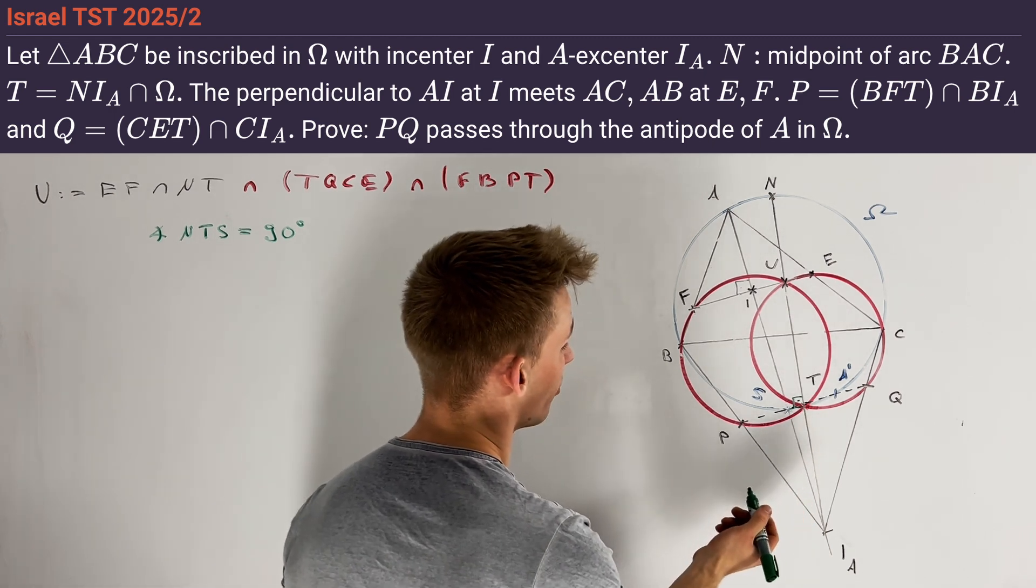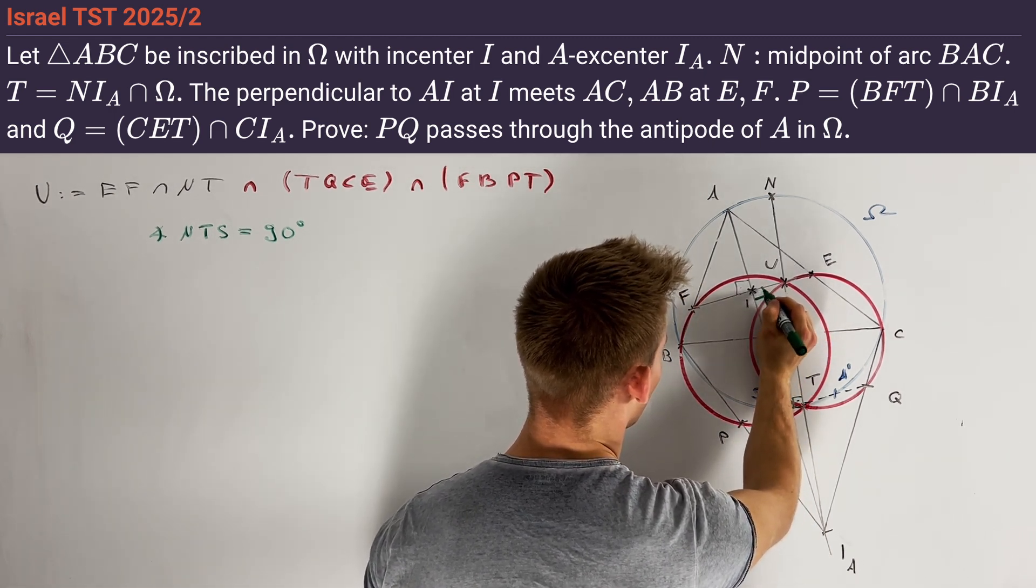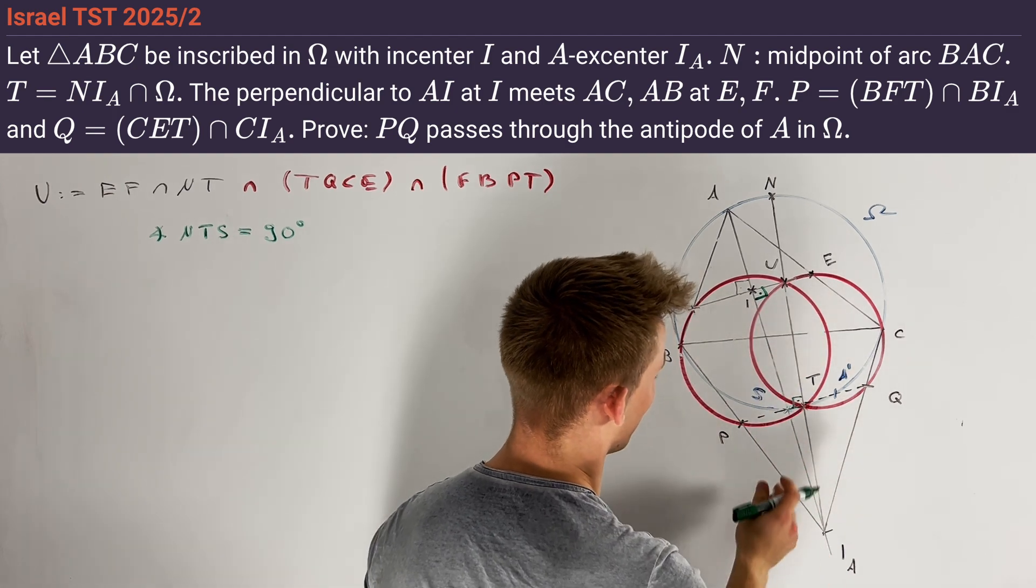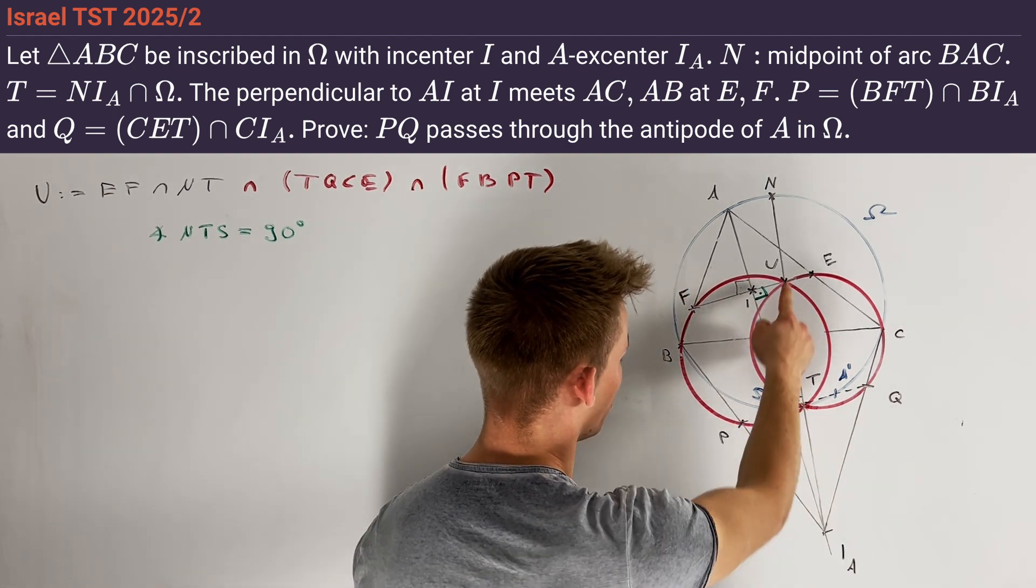Namely, we also know that the angle SIU is equal to 90 degrees. And therefore, the points T and I lie on the circle of diameter US.